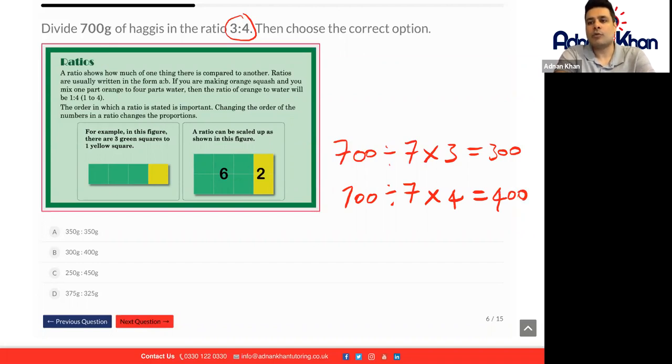So our total ratio will be 300 to 400 altogether. And this is going to be in grams. Thank you and good luck with this.